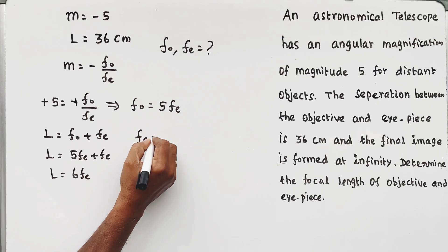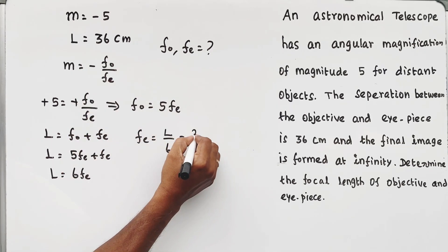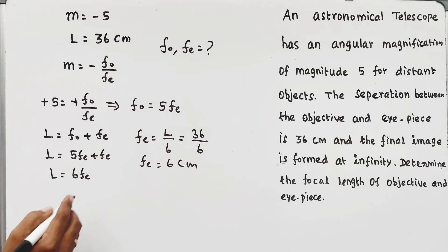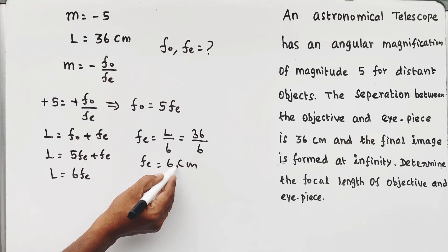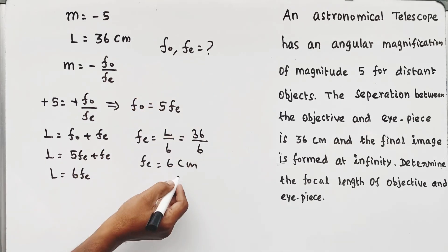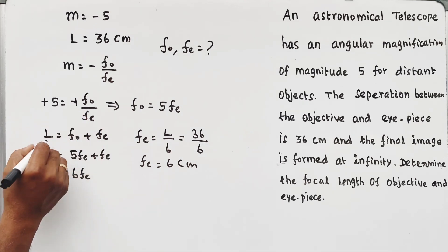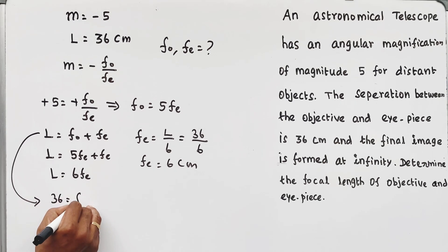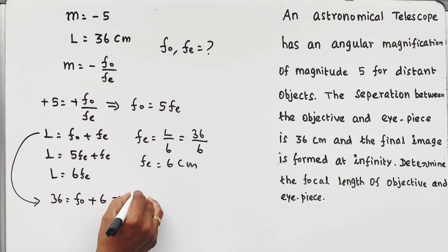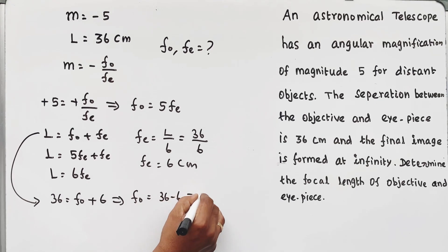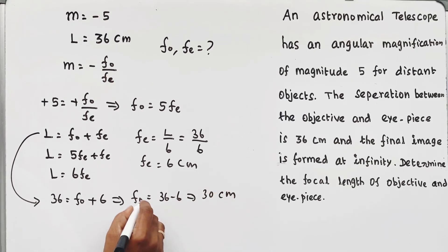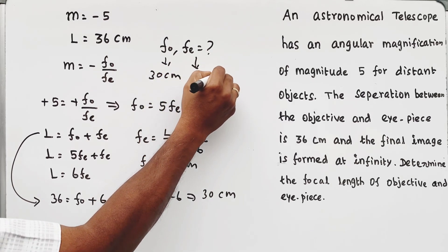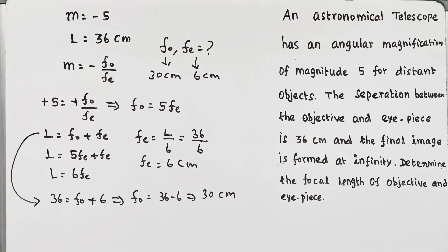The length of the telescope formula: f-not plus fₑ equals L equals 36 centimeters. With f-not equals five times fₑ, substituting: five fₑ plus fₑ equals 36, so six fₑ equals 36, giving fₑ equals six centimeters. Focal length of eyepiece equals six centimeters. Focal length of objective: f-not equals 36 minus six equals 30 centimeters. So fₑ equals six centimeters, f-not equals 30 centimeters — total 30 plus 6 equals 36. Okay, thank you all the best.